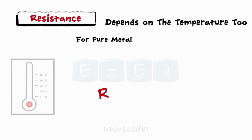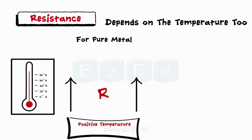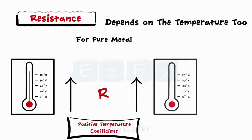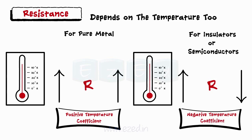The resistance greatly depends on the temperature too. For pure metal, the resistance increases with an increase in the temperature exhibiting a positive temperature coefficient. Whereas, the resistance of insulators or semiconductors decreases with an increase in the temperature leading to a negative temperature coefficient.